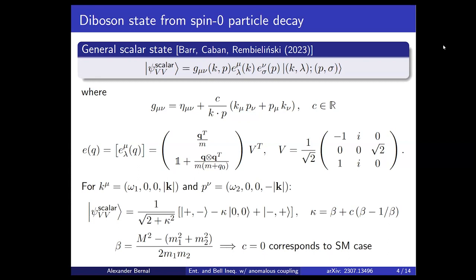Working in the center-of-mass frame and aligning the momentum with the Z direction, the state takes a much simpler form. The parameters omega_1 and omega_2 are functions of the mass of the scalar particle and the off-shell masses of both vector bosons. Plugging this in, we find an expression that may look familiar — it is exactly the same as Jesus showed before, except that instead of the parameter beta, we now have a new parameter kappa, defined as beta plus a term directly proportional to c.